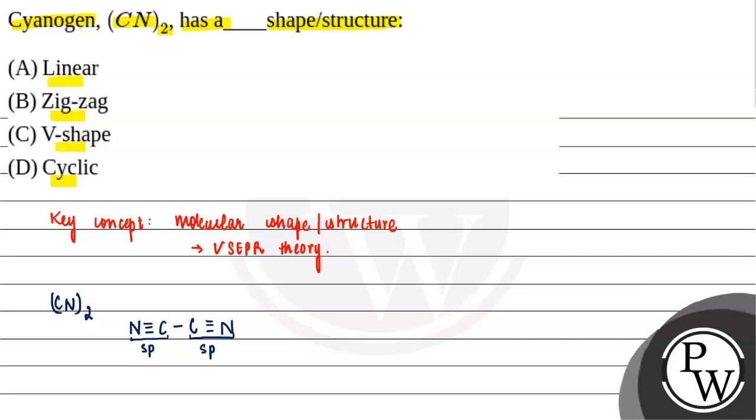We can say a bond angle of 180 degrees, hence our structure would be of linear type. So we can see that CN₂ will form a linear shape.